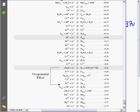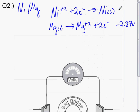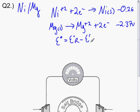And for the nickel system, here it is, it is minus 0.26. So the E° of the overall cell is the E° of the reduction minus the E° of the oxidation, which is equal to minus 0.26 minus negative 2.37, which is equal to 2.11 volts.